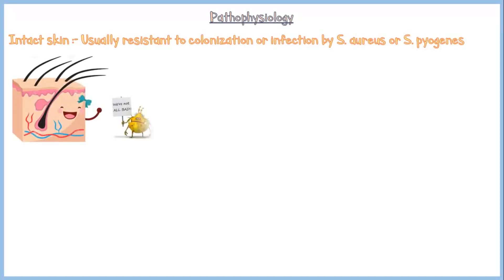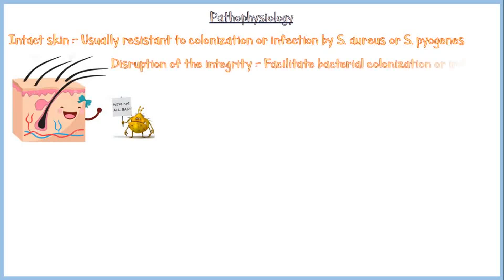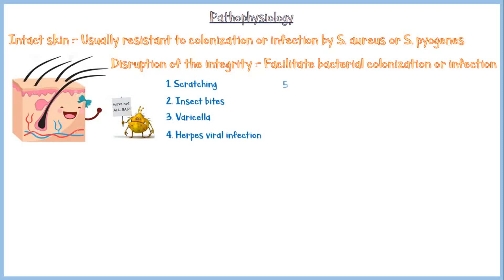Intact skin is usually resistant to colonization or infection by pathogenic bacteria like Staphylococcus and Streptococcus. However, disruption of its integrity may facilitate bacterial colonization or infection. Common mechanisms of skin disruption include scratching, insect bites, skin diseases like varicella and herpes, thermal burns, any kind of trauma, scabies, and pediculosis.